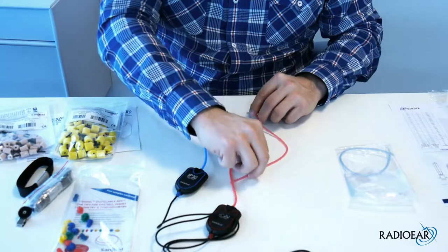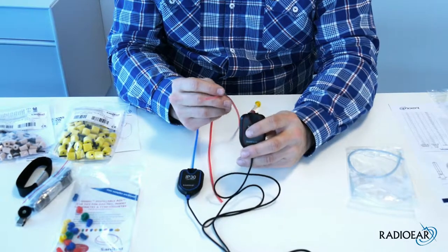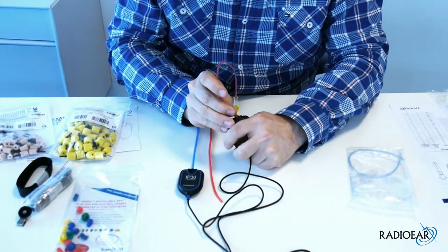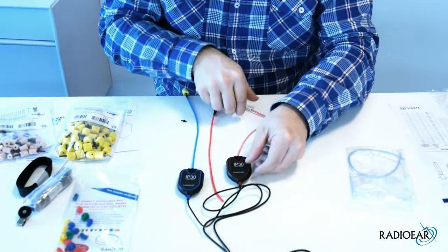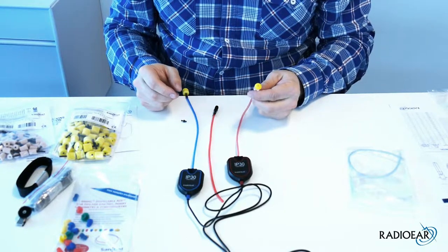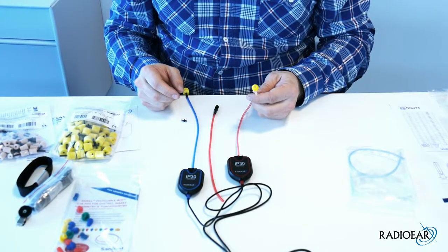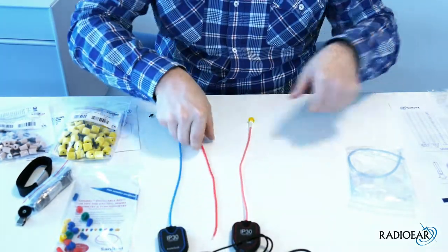When you perform the test, you take this tube after removing the other tube on the IP30, and simply press this on. There you go, that's in. Then you fit this in the ear as you would with any other normal ear tip. So here you have your three ways.